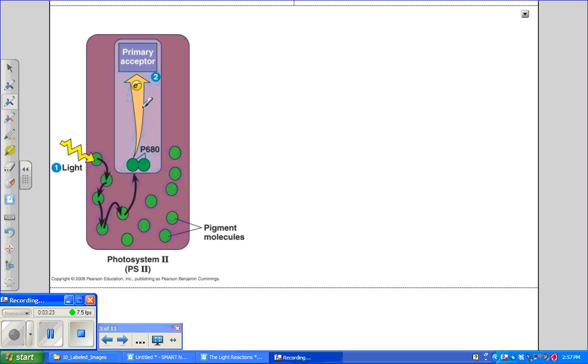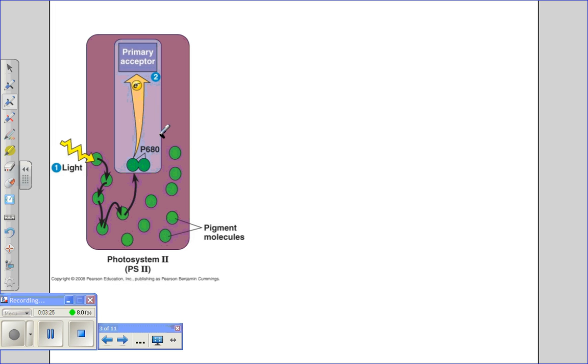Once P680 has lost this electron, we're going to refer to it as P680 plus. This is the most electronegative substance known in biology. This needs an electron very badly to fill back up that space left by the electron in its valence shell by the electron that was taken up by the primary acceptor.